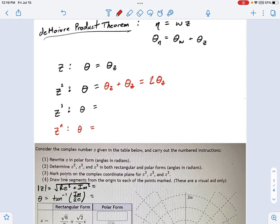What if you multiply again? Well, you're just going to keep on adding these angles together. Now you've got 3 of them because you have 3 powers of z. So that becomes 3 theta z.